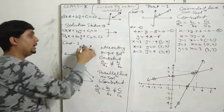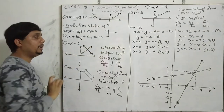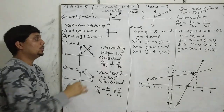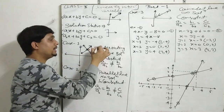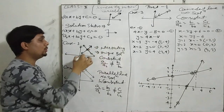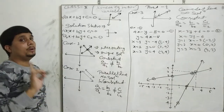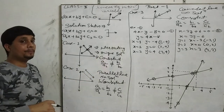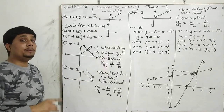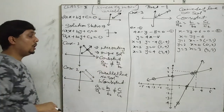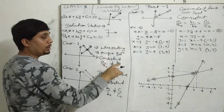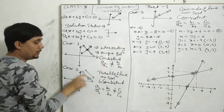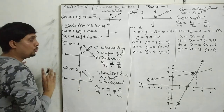The first case is that the two lines intersect. In this case, we are going to take two main points.